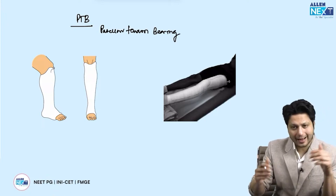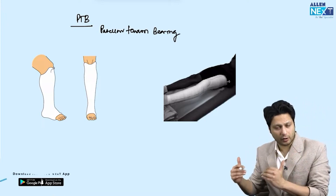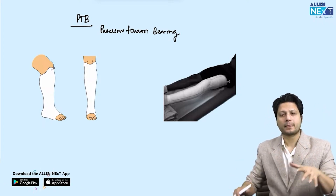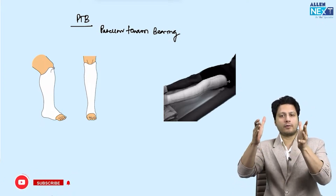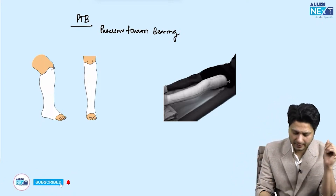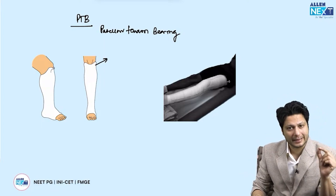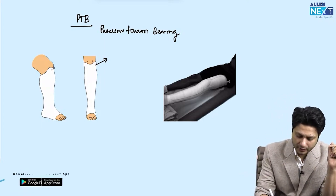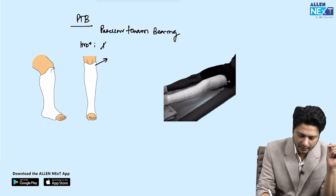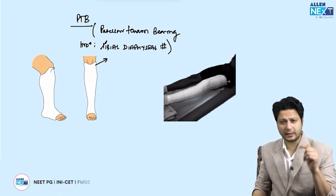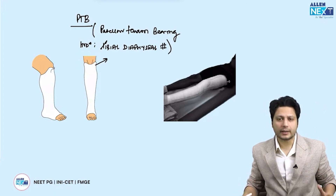You identify the PTB cast when it is applied below the level of the knee — the knee is not immobilized, kept free — and the cast extends all the way up to the tibial condyles. This is a condylar holding cast. The indication for the patellar tendon bearing cast is the tibial diaphyseal fracture.